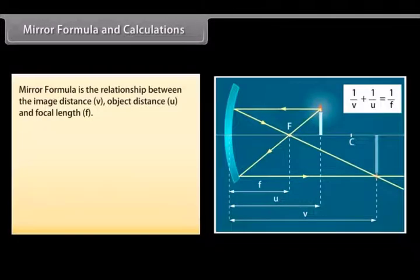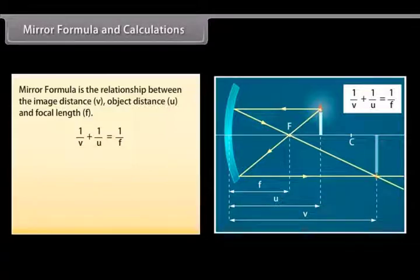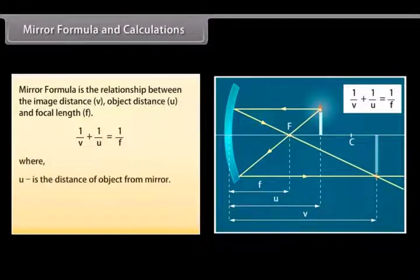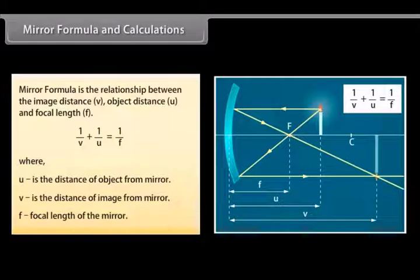Mirror formula and calculations: The mirror formula is the relationship between image distance V, object distance U, and focal length F: 1/V + 1/U = 1/F. Where U is the distance of the object from the mirror, V is the distance of the image from the mirror, and F is the focal length of the mirror.